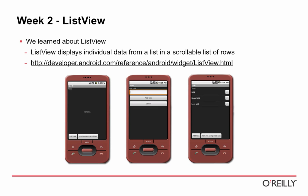In week two, we went further by working with a ListView, which is central to showing a list of items in an easily scrollable list on screen. We talked about how to create custom views for each item in the list — we made a custom view that showed the title of a task and a checkbox so you could tap to check off completed tasks. We also talked about ListActivity, which makes it very easy to work with lists.